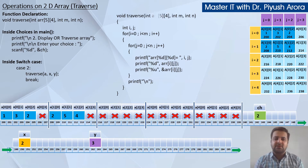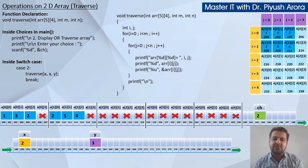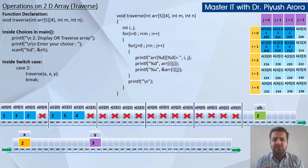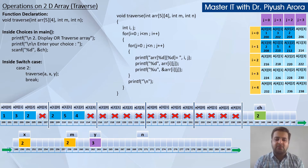The void traverse function will verify that such a function exists, and execution will start from here. Very important: inside the function, you passed a, x, and y. Here you can see arr, m, and n. Both 'a' and 'arr' denote the same array, because array is passed by reference — the address of the array's first element, which is 200, is passed. The remaining values x and y are passed by value, so x's value copies into m, and y's value copies into n. x is 2 so m becomes 2, and y is 3 so n becomes 3.